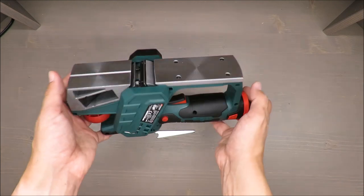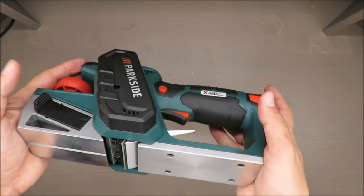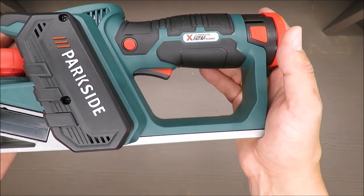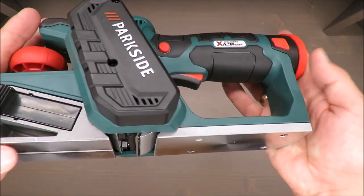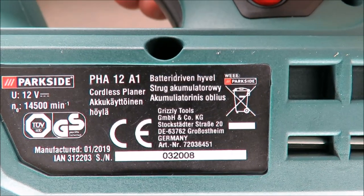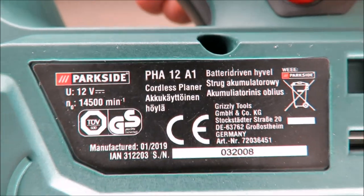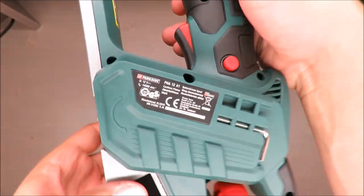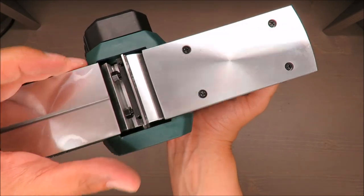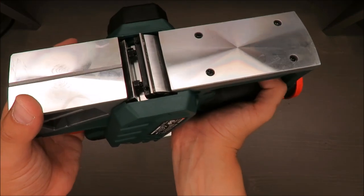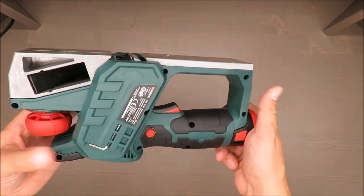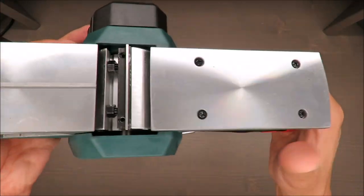Other basic features are no-load rotation speed almost 15,000, exactly 14,500 RPM. Planning width: 56 millimeters. Cutting depth from 0 to 2 millimeters.